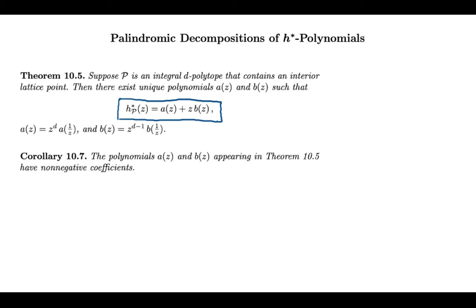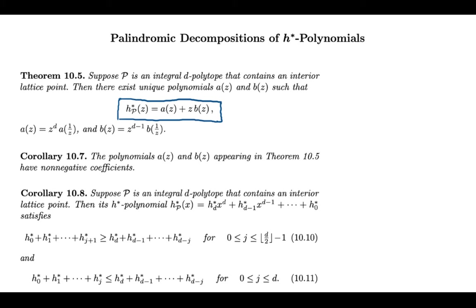As you can imagine, this has a consequence that we can express entirely in terms of the h-star coefficients. This is sort of an easy corollary: you can translate the fact that a and b have non-negative coefficients into some linear inequalities among the h-star coefficients. And this is corollary 10.8 that you see here.